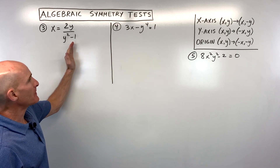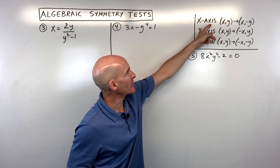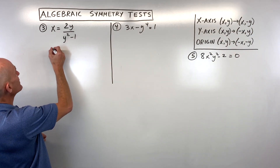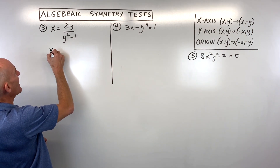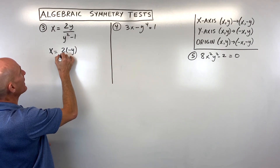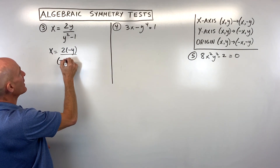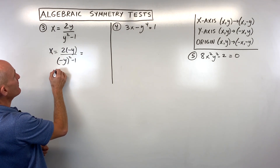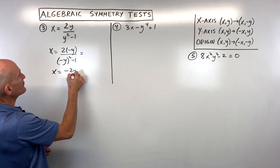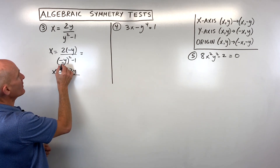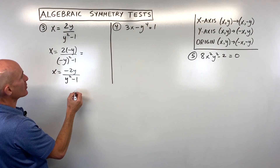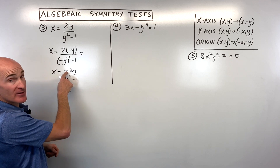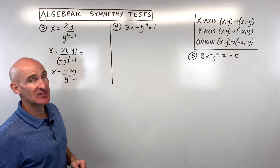For example number three, I'll follow the same pattern — starting with x-axis symmetry by replacing y with negative y. We get x equals 2 times negative y over negative y squared, minus 1. Simplifying, this becomes x equals negative 2y over positive y squared, minus 1. This doesn't quite match the original because of that negative, so it does not have x-axis symmetry.